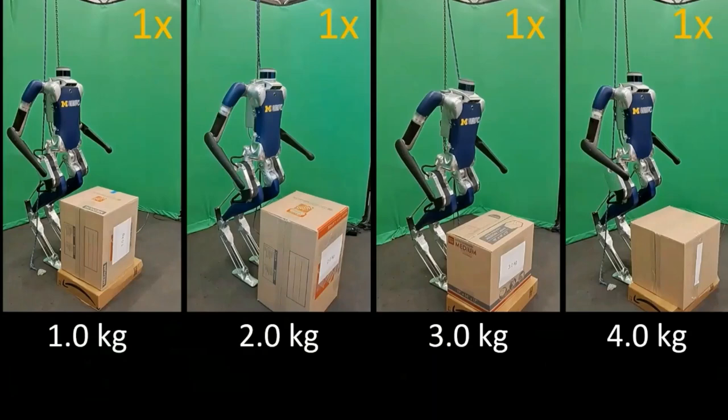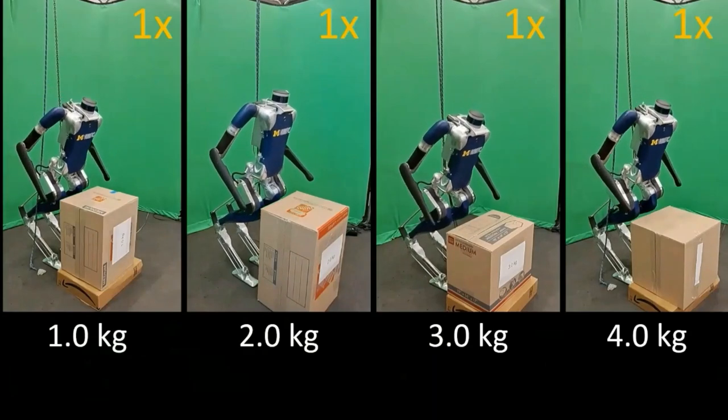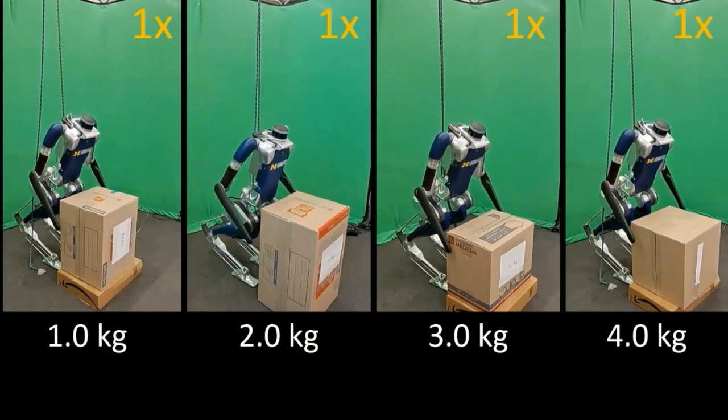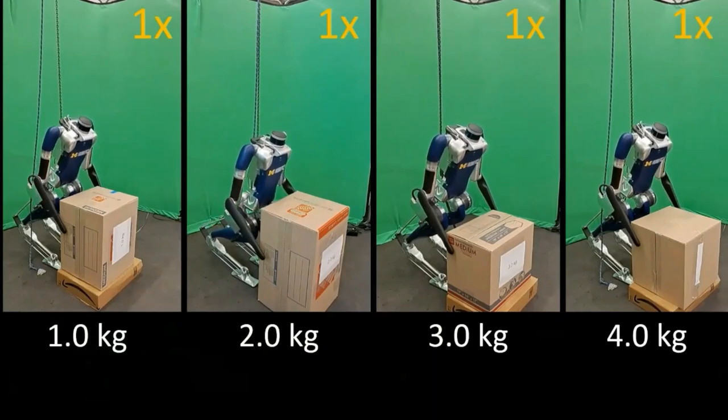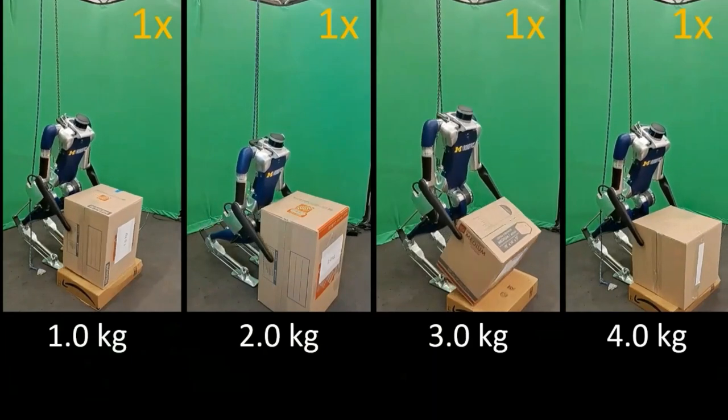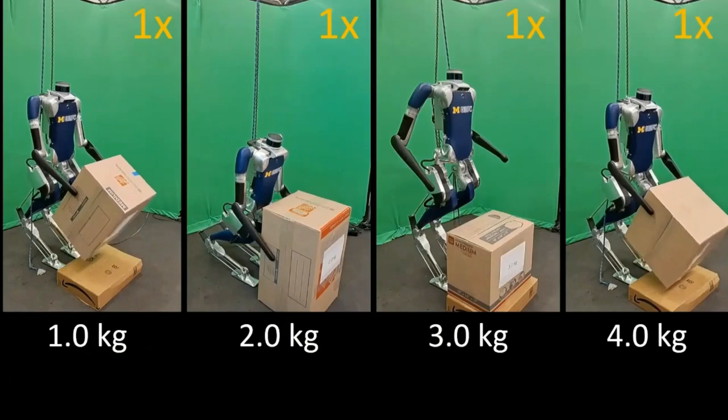The robot remains stable while lifting boxes with total masses ranging from 0.5 kg to 4 kg, right under the robot's nominal payload capacity of 5 kg.